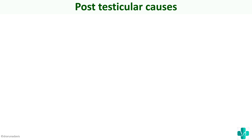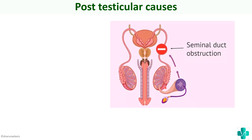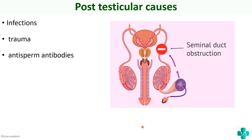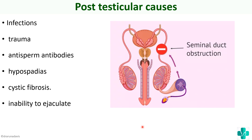Moving on to post-testicular factors — here sperm production is normal, but the route of sperm travel is obstructed, particularly due to seminal duct obstruction. The flow of semen into the penis is obstructed. This can be due to infections, trauma, anti-sperm antibodies which destroy the sperms, hypospadias, cystic fibrosis, as well as inability to ejaculate. In all these conditions, there is proper sperm production but the ability for the sperm to travel is hindered.